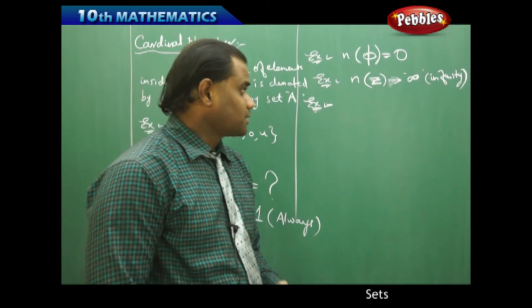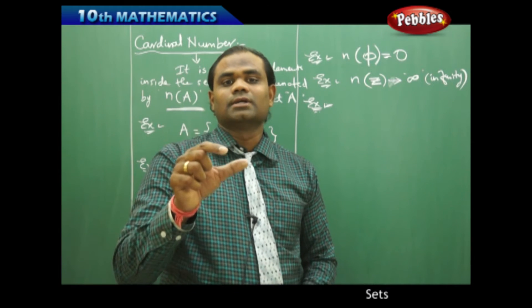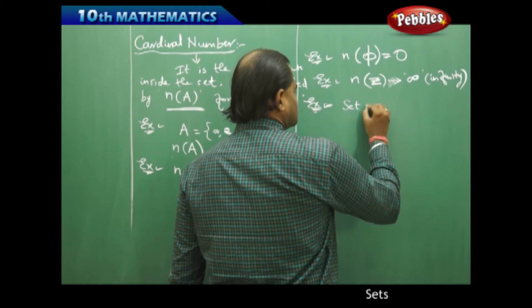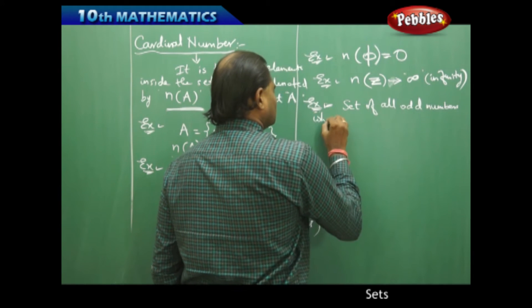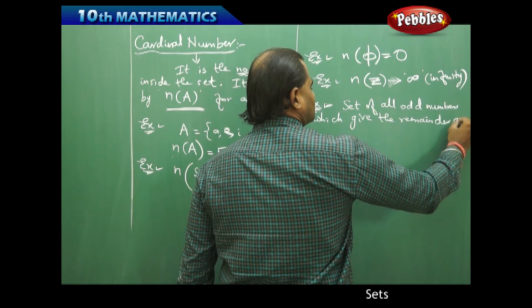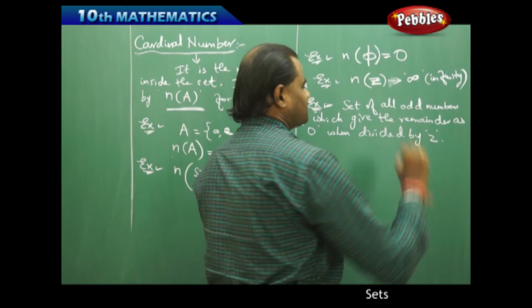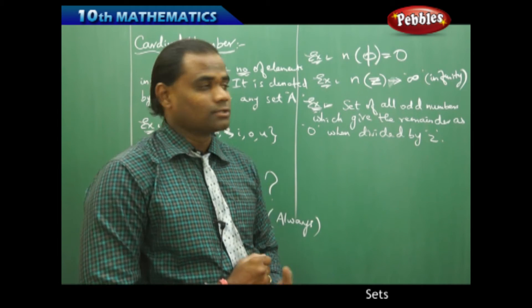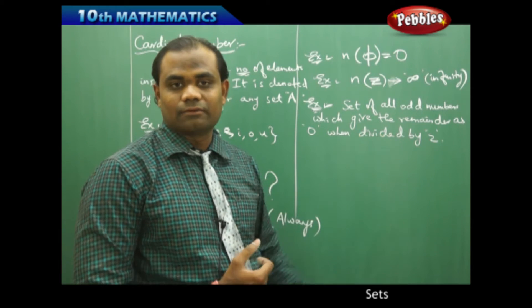Now I want to take an interesting example for finding the cardinal number because this example makes us understand how important it is to realize the set before finding its cardinal number. Say, for example, I have the set of all odd numbers which give the remainder as 0 when divided by 2. The whole question has many mathematical properties hidden inside the statements. So it is very important to identify and understand the statement before we generate the roster form and find the cardinal number.